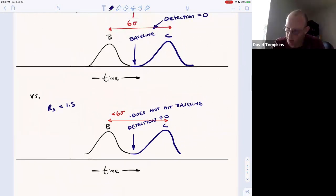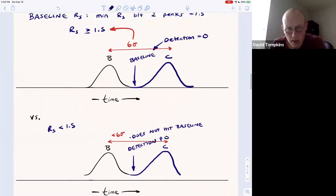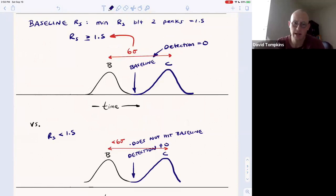So we always want to operate our column to get highest efficiency and highest plate number, as we've discussed, or maximize the resolution. And at the point at which it becomes 1.5, then we're pretty much satisfied with our separation.